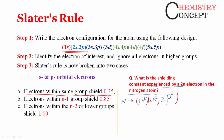I have to find the shielding constant for one 2p electron. Electrons within the same group shield 0.35 each. There are a total of 5 electrons in the group [2s², 2p³]. For one electron, the remaining 4 electrons each contribute 0.35.